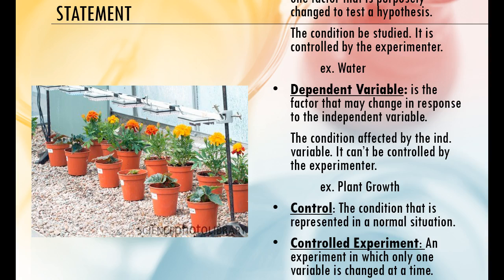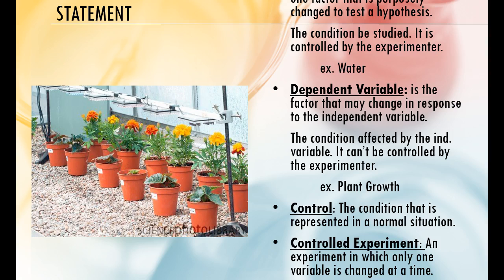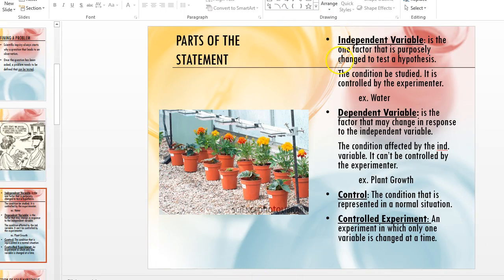The parts of your hypothesis contain your variables. The independent variable is the factor that is purposely changed to test the hypothesis — this is the condition we're studying. For example, if I want to know the best amount of water to get maximum plant growth, what I change is only the amount of water I give my plants. What depends on the amount of water? Plant growth. So the independent variable is what I change. The dependent variable I can't control — I can only measure it. In a controlled experiment, only one variable is changed at a time, and I always have a control — something I'm comparing my change to.